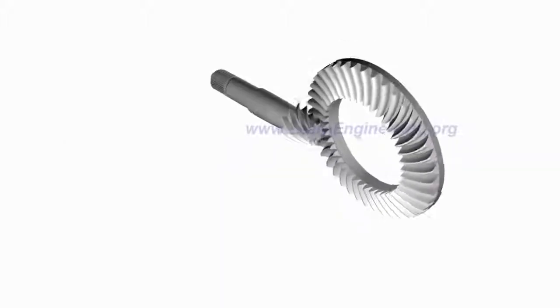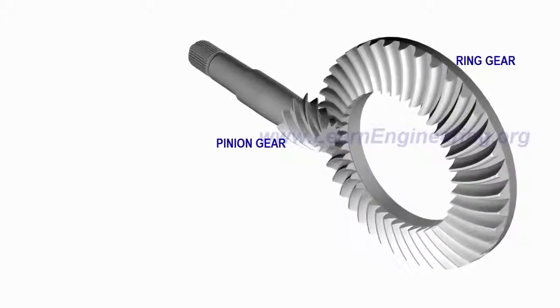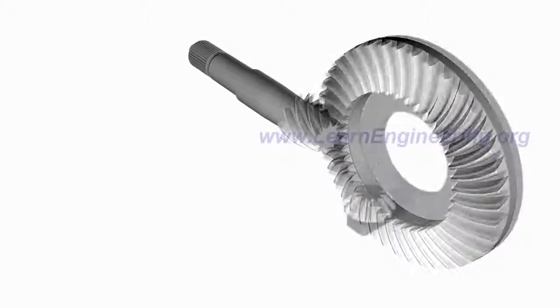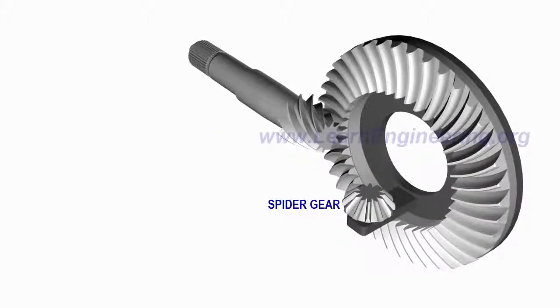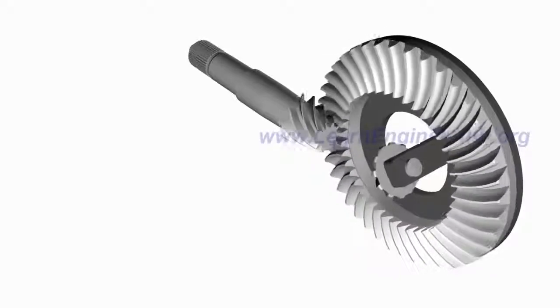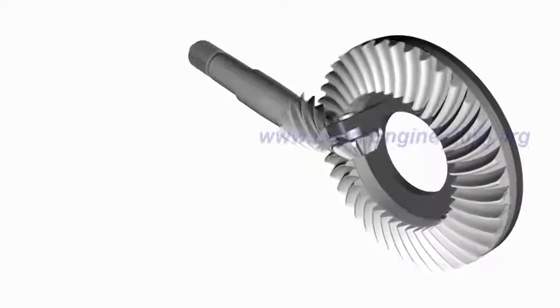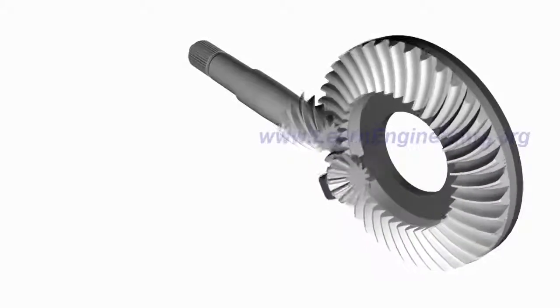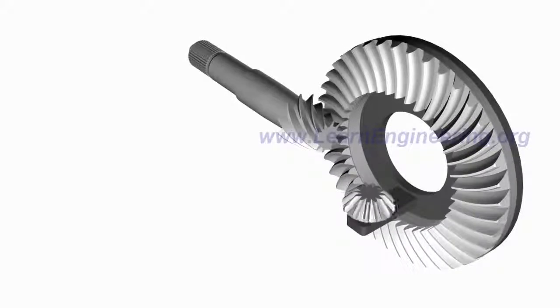Power from the engine is transferred to the ring gear through a pinion gear. The ring gear is connected to a spider gear, which is at the heart of the differential. Spider gear is free to make two kinds of rotations, one along with the ring gear and second on its own axis.